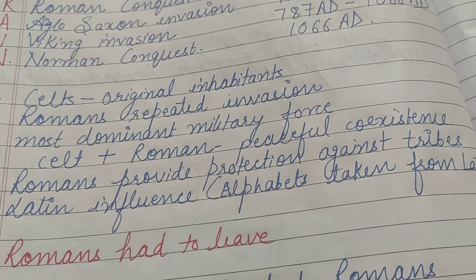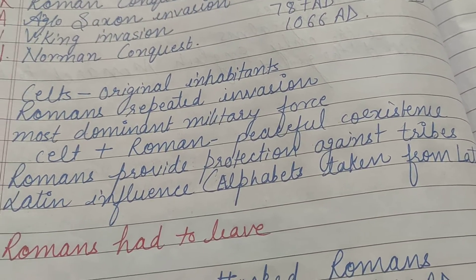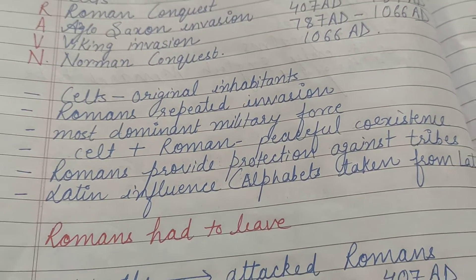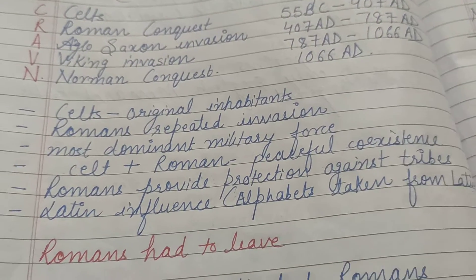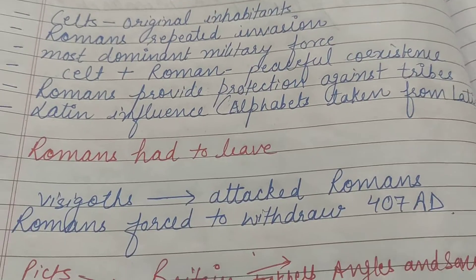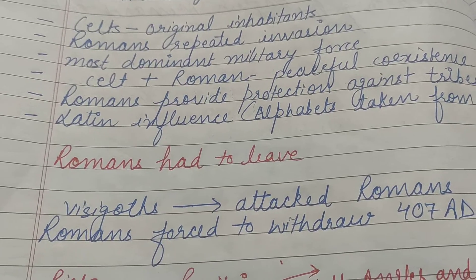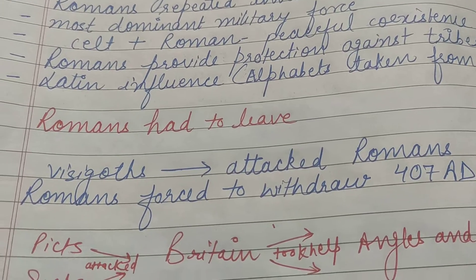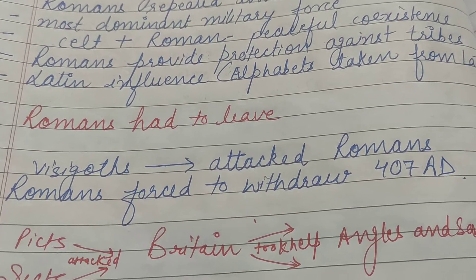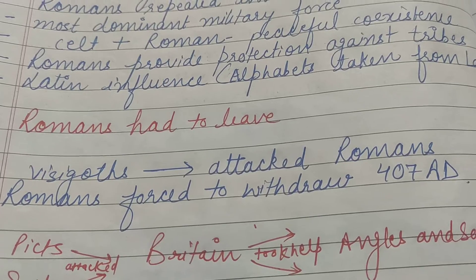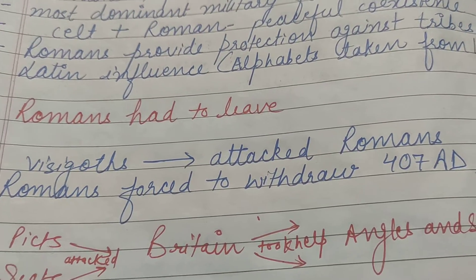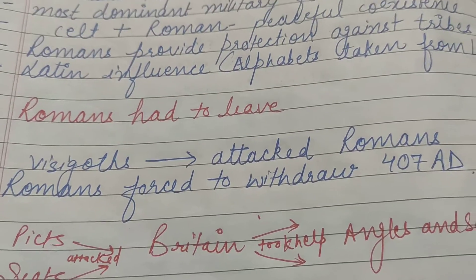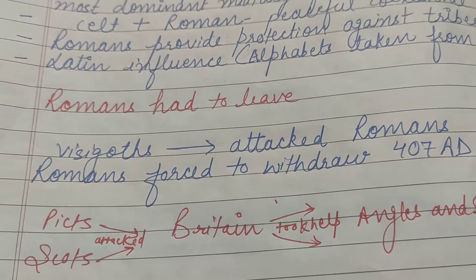Friends, English ke jo bhi alphabets hain A to Z, wo bhi Latin language se hi liye gaye hain. But achanak se 407 AD mein Romans ko Britain chhodkar jaana pada, kyunki ek tribe thi Visigoths — ye ek Germanic tribe thi, bahut cruel tribe thi — jo ki Rome ko attack kar rahi thi. Apni land bachane ke liye, Rome ko bachane ke liye Romans Britain se chale gaye.